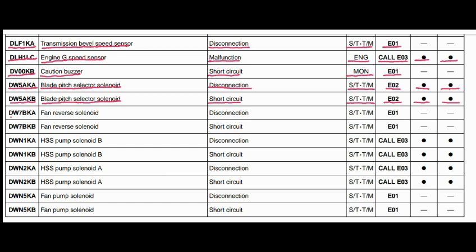Code DW7BKA. The faulty part is the fan reverse solenoid. The problem is disconnection. The steering and transmission controller is related to this code, and the action code is E01.